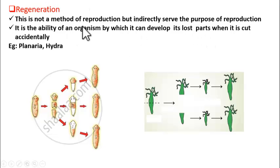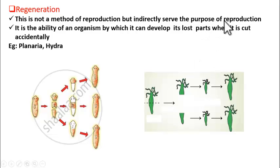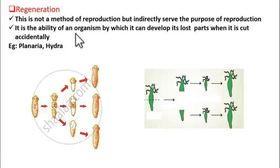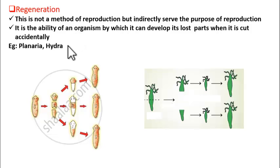Now let us see what is regeneration. Regeneration is not a method of reproduction, but it serves the purpose of reproduction — it is indirect reproduction. It is the ability of an organism to develop its lost parts when it is cut accidentally. This is most prominent in simple multicellular organisms like planaria, hydra, starfish, etc.